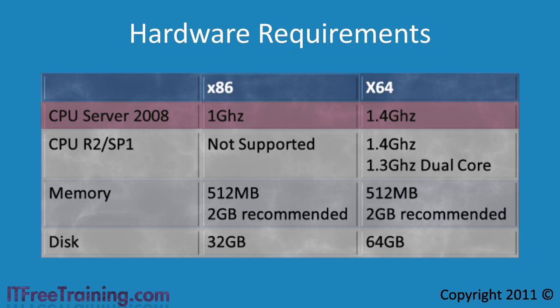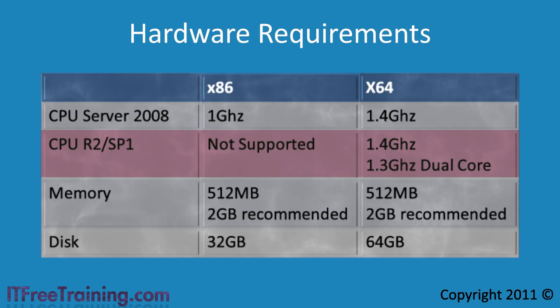These figures are the minimums supplied by Microsoft which Windows Server 2008 will work on. The minimum requirements will not give you the fastest Windows experience, so you should always try to exceed these values where possible. If you are running Windows Server 2008 R2 with or without Service Pack 1 on a 64-bit system, you need a 1.4 gigahertz CPU. If you are running a dual-core 64-bit CPU, Microsoft has dropped the requirement to 1.3 gigahertz. Windows Server 2008 R2 does not support 32-bit CPUs, so you will need to run Windows Server 2008 if you have a 32-bit CPU.